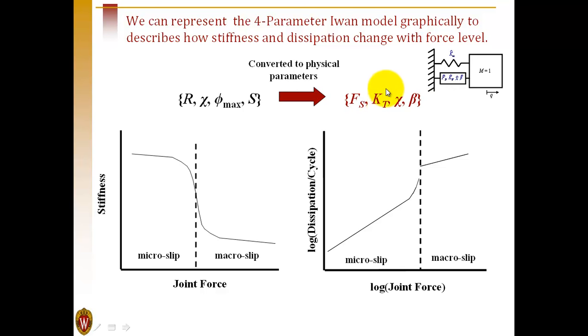We can think about the stiffness and the dissipation of the joint versus amplitude. The parameter KT governs the stiffness of the joint as we transition from micro-slip to macro-slip. Fs is the slip force, or the force at which the joint transitions.